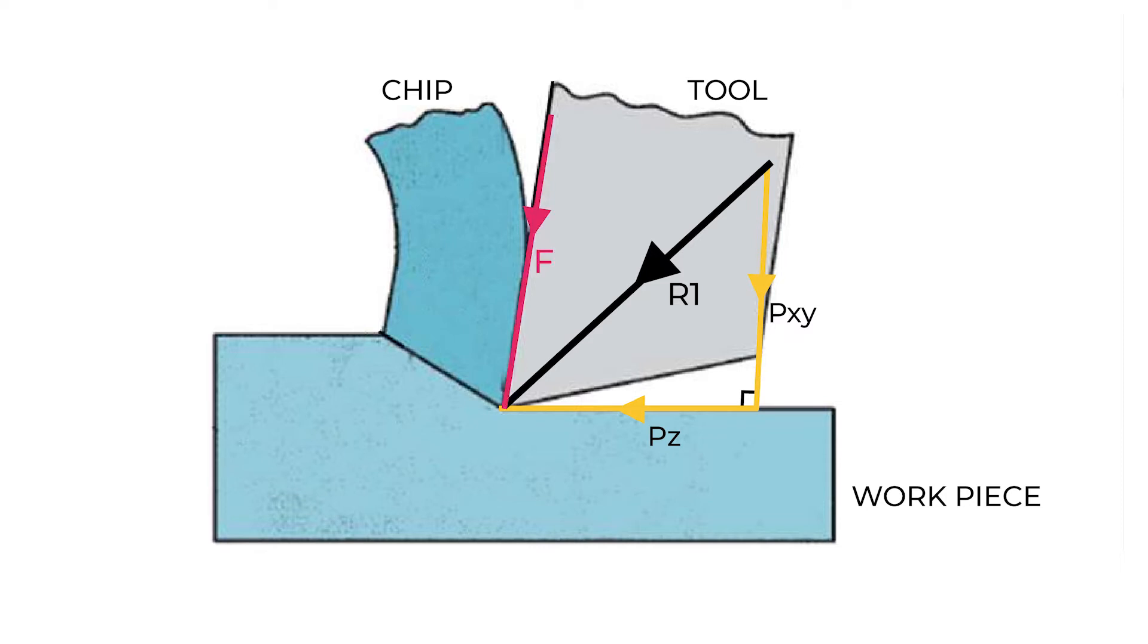As the chip flows on the rake face, it experiences friction, and so we have friction force F and normal force N on the cutting tool. The resultant of these forces is R1.